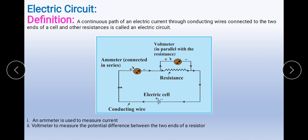Here there is a voltmeter. The volt is the unit for potential difference, so a voltmeter is used to measure the voltage, which is the potential difference. There is a resistance over here — there is an obstacle, a hindrance to the flow of current. This is again a resistance. And there is an electric cell which gives the positive and the negative potential.